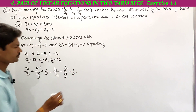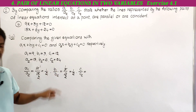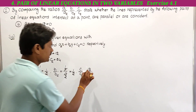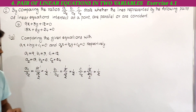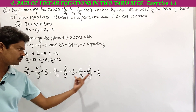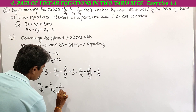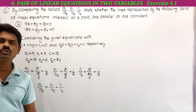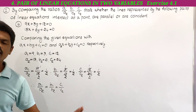Next we have to write c1 by c2. c1 is 12 and c2 is 24, so it is 12 by 24. 12 is the common factor; we can cancel to get c1 by c2 also equal to 1 by 2. If you observe, all three are equal: a1 by a2 is equal to 1 by 2, b1 by b2 is equal to 1 by 2, and c1 by c2 is also equal to 1 by 2. Therefore a1 by a2 is equal to b1 by b2 is equal to c1 by c2, and we can say the given pair of equations are coincident lines.